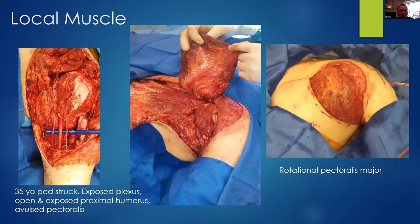Local muscles such as the pectoralis flap can be very powerful to cover open proximal humerus wounds and brachial plexus injuries — it's a gimme when the muscle has already evolved off the humerus. The latissimus is the workhorse for shoulder wounds, but in cases where the wound is more anterior or there's a chest wound, I find the pectoralis muscle flap to be quite useful.